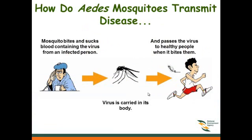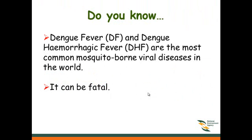How does it transmit disease? A mosquito bites and sucks blood containing the virus from an infected person. The virus circulates in the mosquito's body and is passed to healthy people when it bites them.